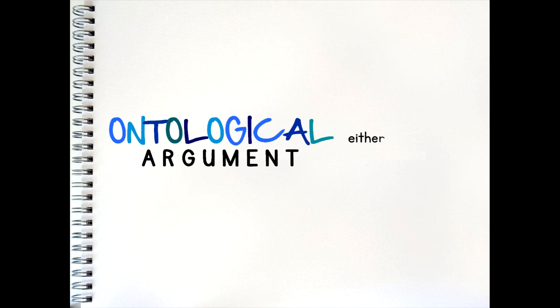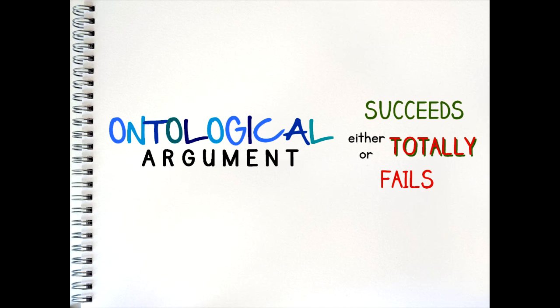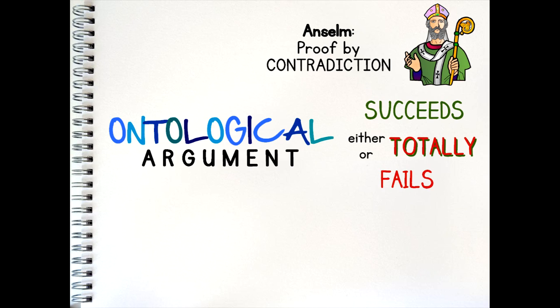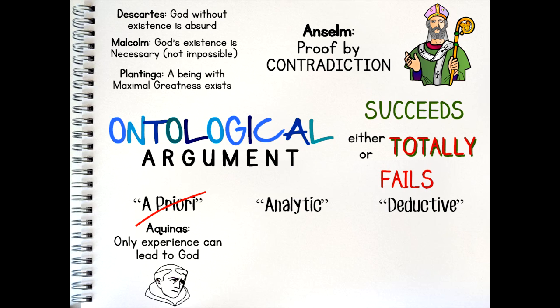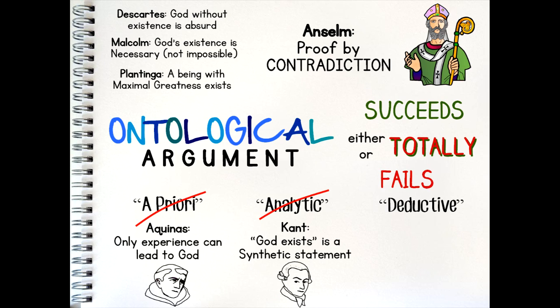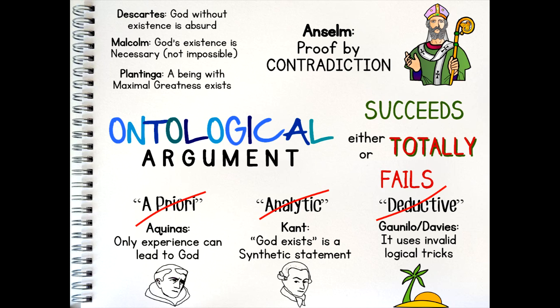So what to conclude? It has been said that the ontological argument either totally succeeds or it totally fails. The supporters believe that if we accept their assumptions about the nature of God, then we cannot fail to accept that God must exist. Anselm says that if God doesn't exist we are left with an inherent contradiction, therefore God cannot not exist — while Descartes, Malcolm and Plantinga created their own revisions. If we find ourselves agreeing with the premises of the ontological arguments, then it becomes difficult, if not impossible, to disagree with their conclusions. On the other hand, the critics believe it fails: Aquinas said no a priori argument can prove God's existence; Kant said 'God exists' can only ever be a synthetic statement based on evidence, not an analytic statement; and Gaunilo and Davis argued that although it claims to be a deductive argument, it is invalid as it uses logical tricks to get to its conclusion.